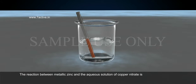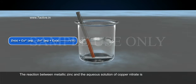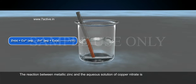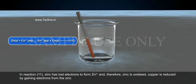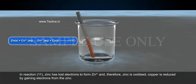The reaction between metallic zinc and the aqueous solution of copper nitrate is: Zn(s) + Cu²⁺(aq) → Zn²⁺(aq) + Cu(s). In this reaction, zinc has lost electrons to form Zn²⁺ and therefore zinc is oxidised. Copper is reduced by gaining electrons from the zinc.